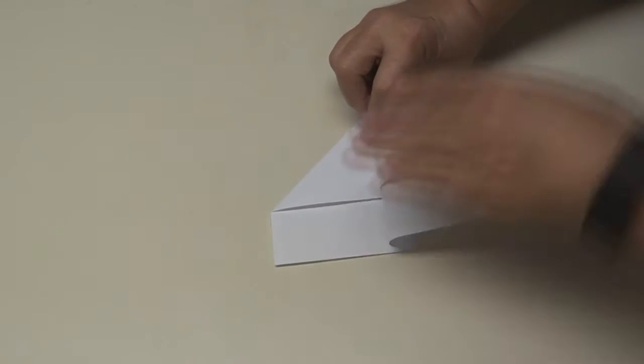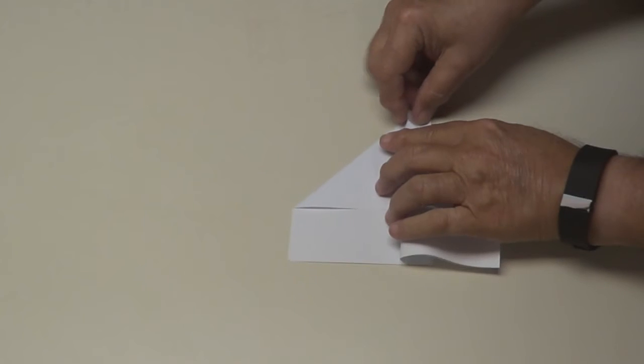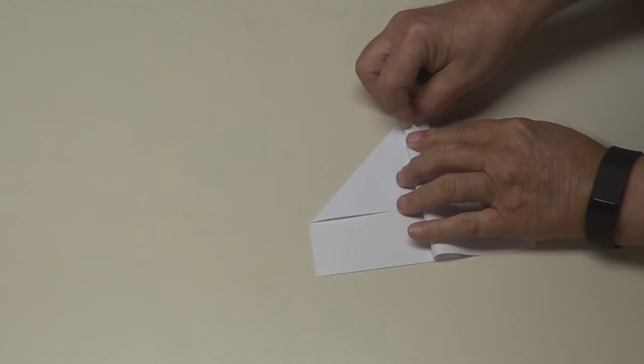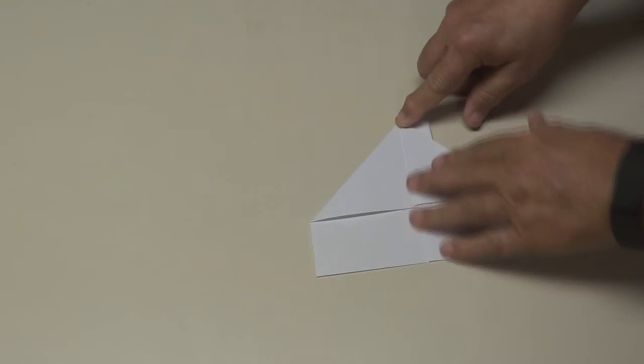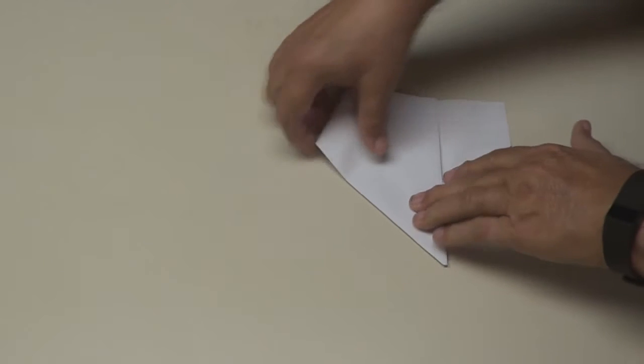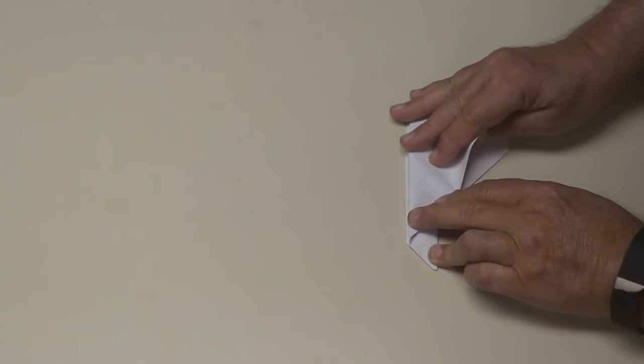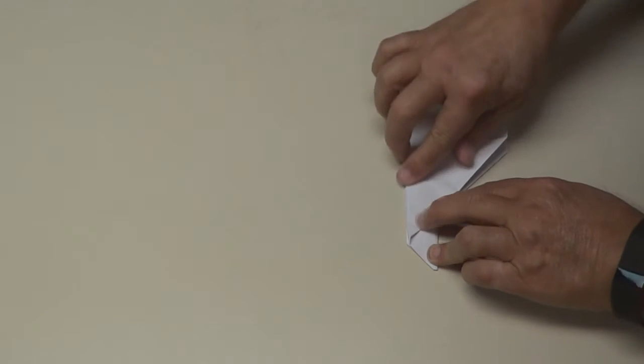Fold your wings down about an inch from the bottom here, about there. Crease it. Good crease. Turn it over and do it the same way. Make them even, right about there. Okay, crease it.